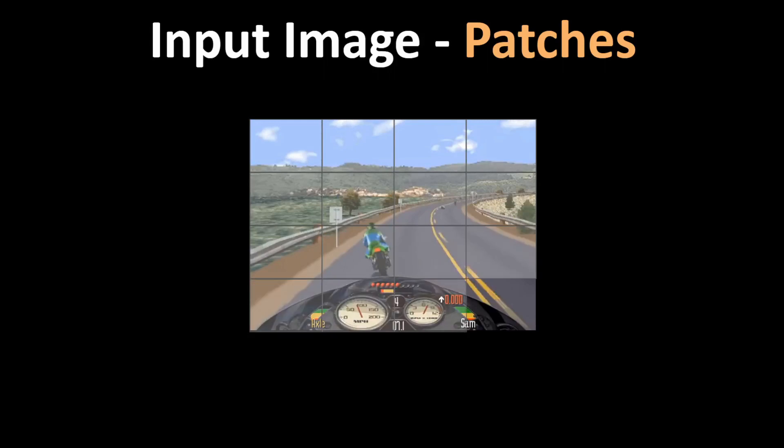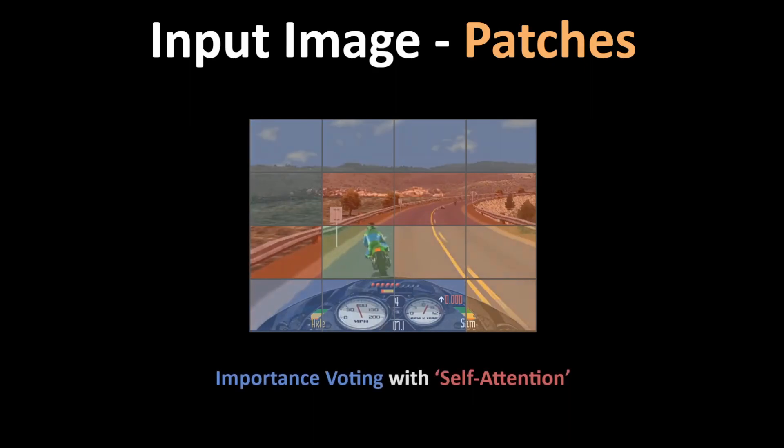Let's say n number of patches. Then we assign importance to these patches with a self-attention mechanism, which in a way defines how information-rich that particular patch is.